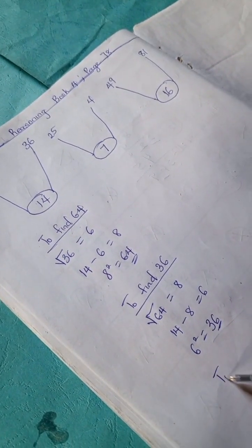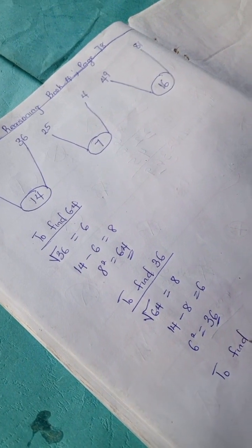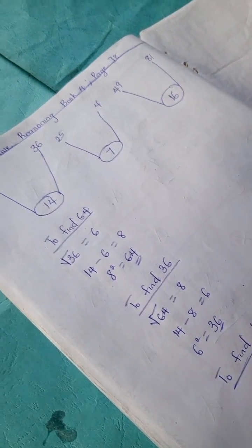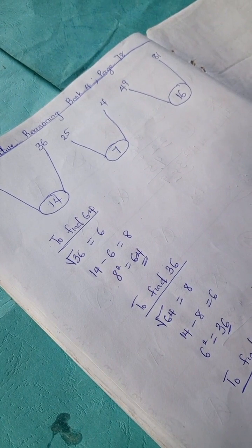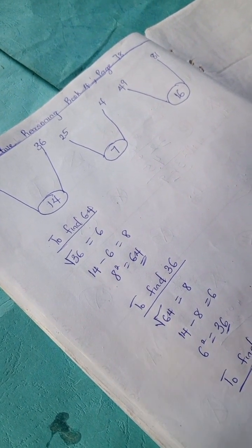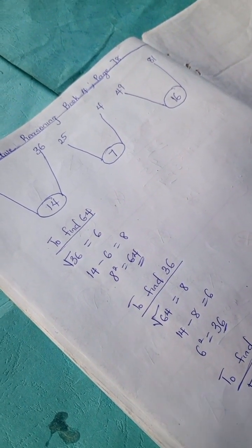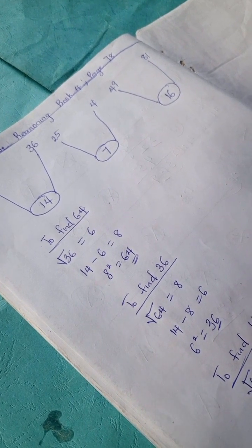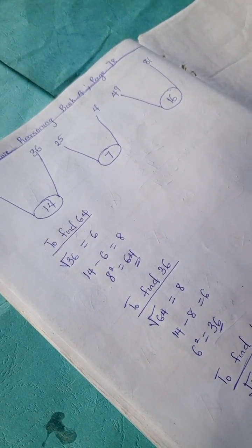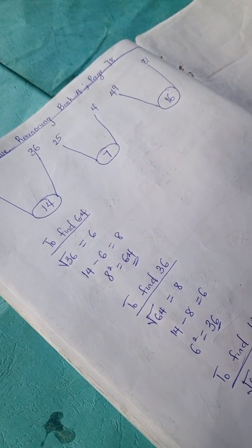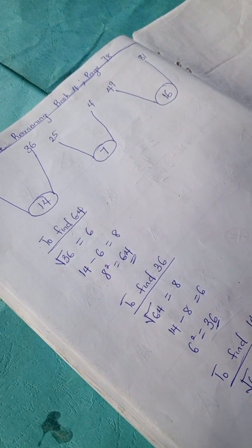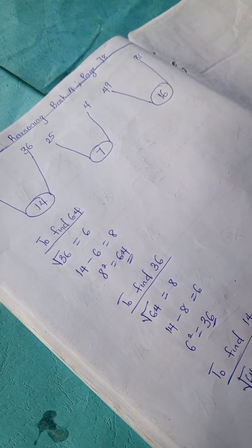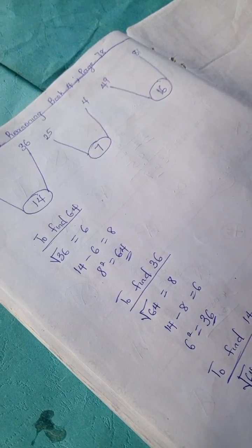So to find 14, we're going to have square root of 64 plus square root of 36. Square root of 64 is 8, plus square root of 36 is 6, and our answer is 14.